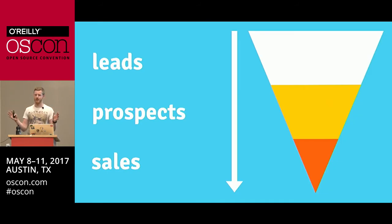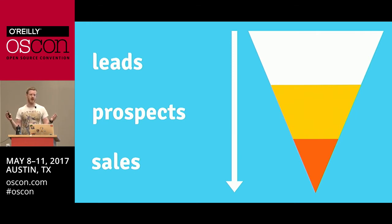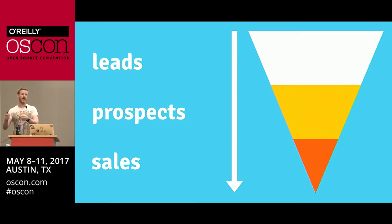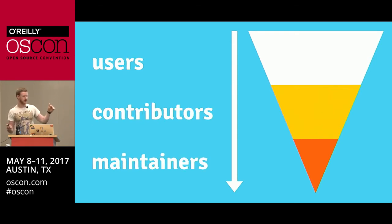Looking at this from a sales perspective — apologies, my understanding of sales is relatively limited — when people talk about a sales funnel, you have leads, prospects, and sales. Leads are people who may be interested in your product. Prospects are people who are interested but haven't yet made a purchase. Sales are people who have actually agreed to hand over money. And as you can see from it being a triangle, there are going to be more leads than prospects than sales. Similarly, with open source, you're going to have more users than contributors than maintainers.